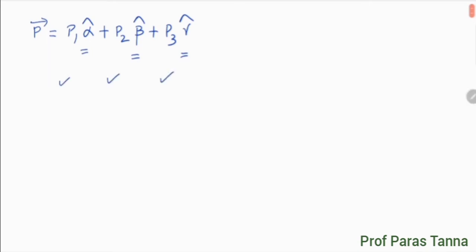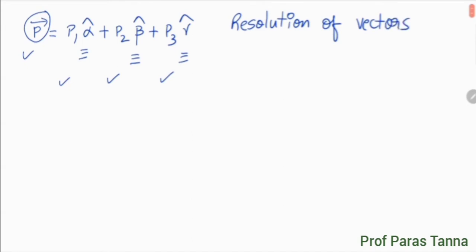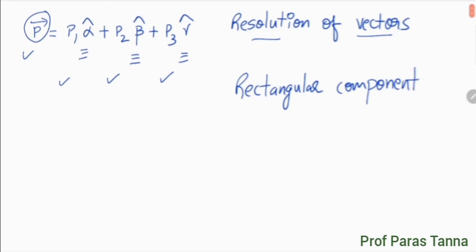P1, P2, and P3 are the components of P vector along the three directions alpha-cap, beta-cap, and gamma-cap. The process of splitting a given vector into its components is called the resolution of vectors. And if these components are along directions which are mutually perpendicular, they are called rectangular components. Today we will study rectangular components in detail.